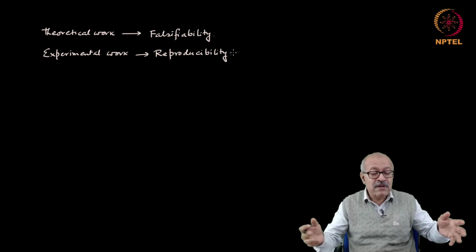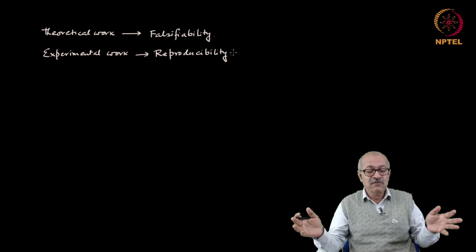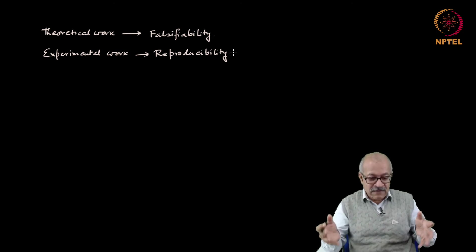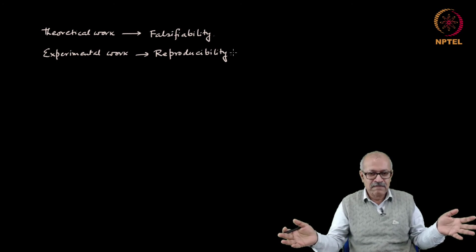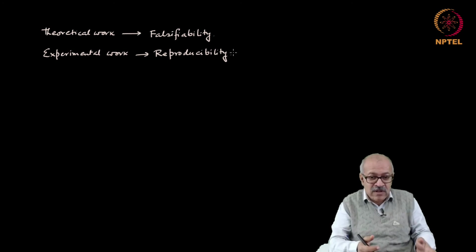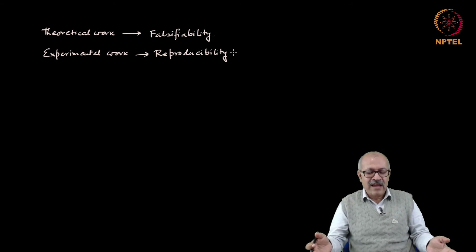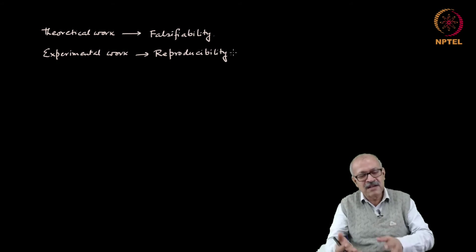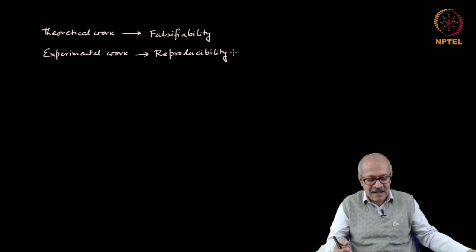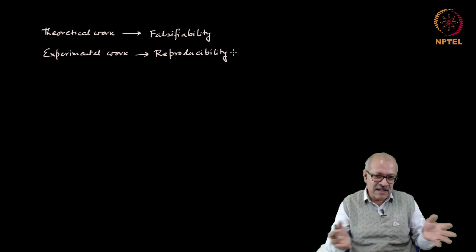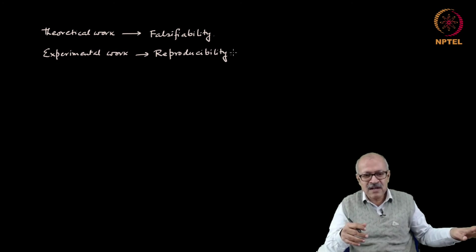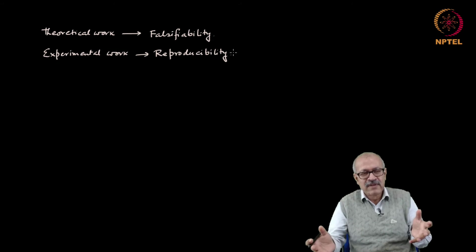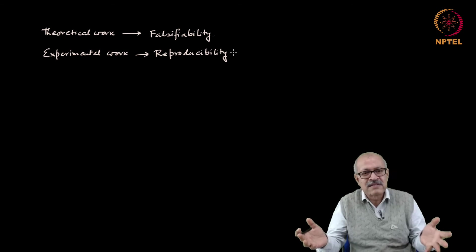They published the paper, there was a huge euphoria over that because people believed that if that is really so, then that is the solution of all energy problems in the world. So people jumped into it, tried to reproduce the result, but everybody failed. And finally, a few months later, the scientific community reported to the journal that something is amiss, we are not getting the same result. And the journal confronted the scientist, they sent a delegation to that lab, and the scientist was unable to reproduce the result. And so the whole paper was retracted and it was a scandal, it was a scientific scandal you can say.